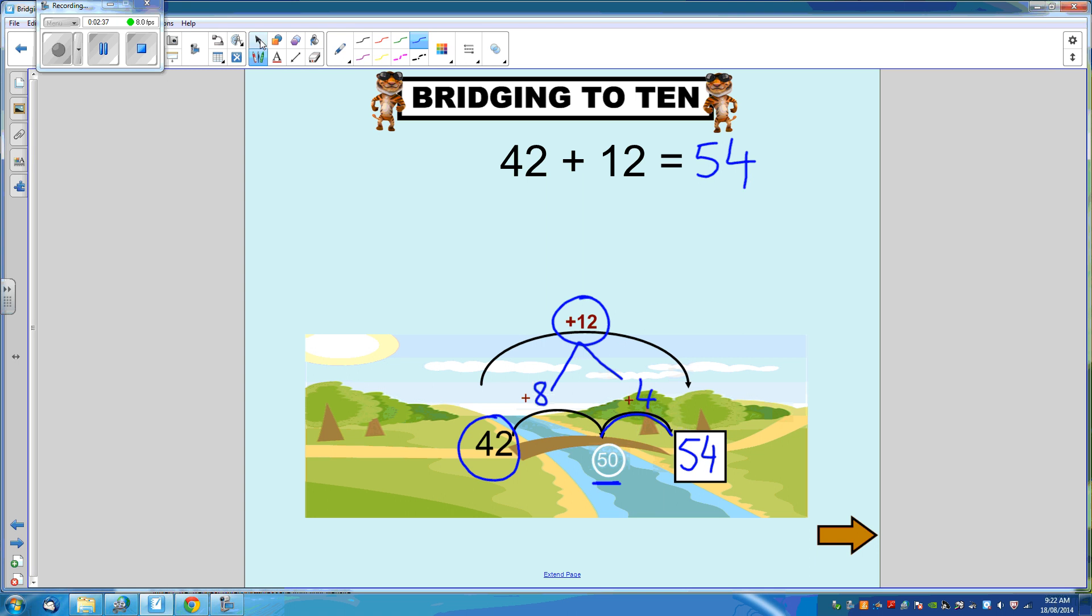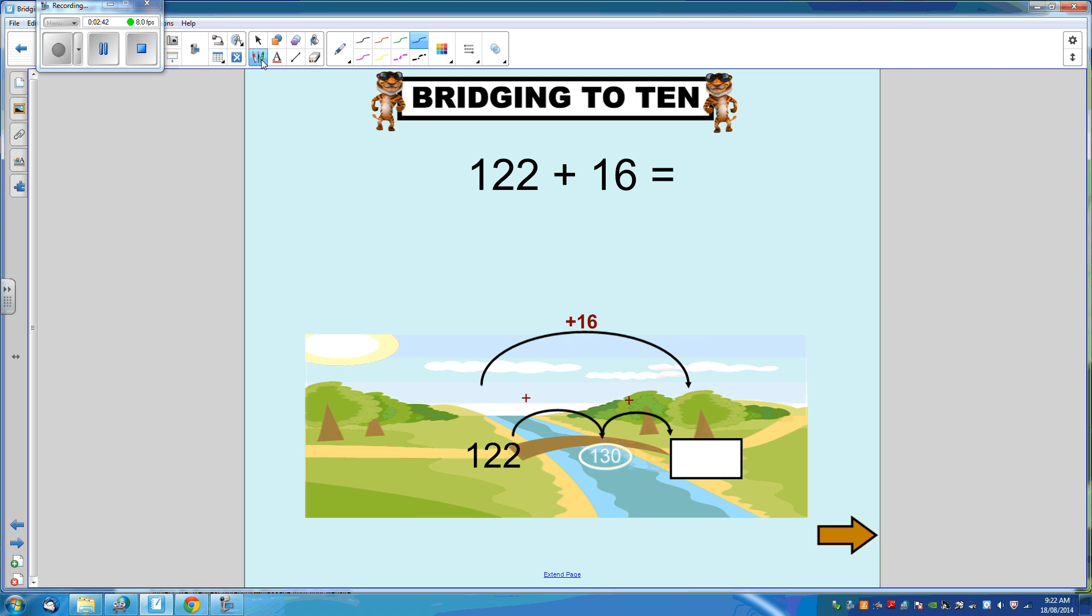And just one more example until you'll be able to do it all by yourself is this one. 122 plus 16. Remember that using the bridging to 10 technique we want to stop on the bridge at the next decade. So the next decade from 122 is 130.